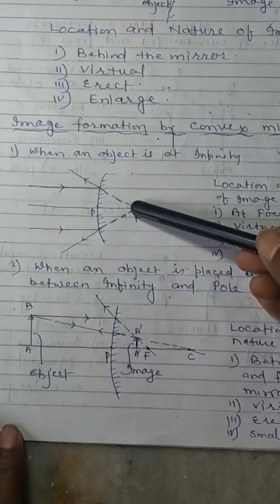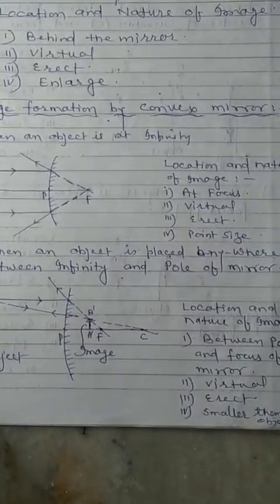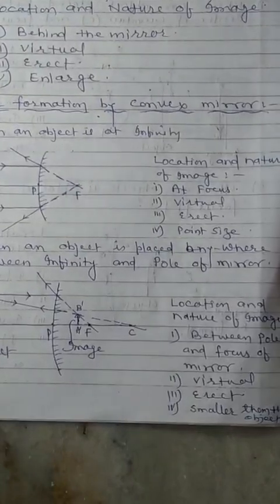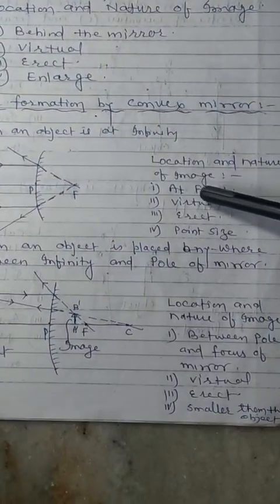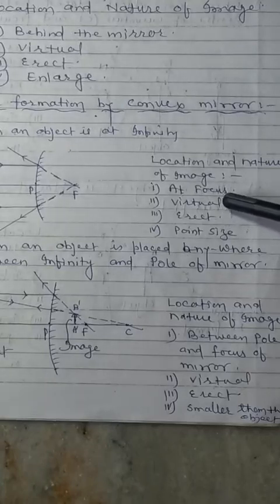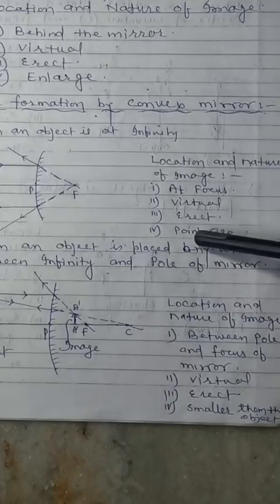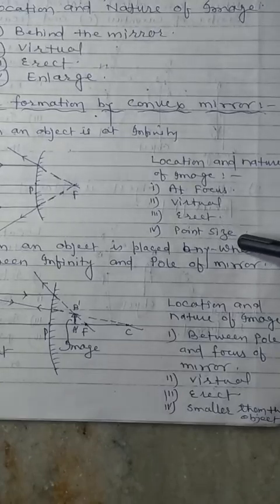The image is very small — point size. So the location and nature of the image: first, image is formed at focus. Second, the image is virtual. Third, it is erect. And the image is point size — diminished.